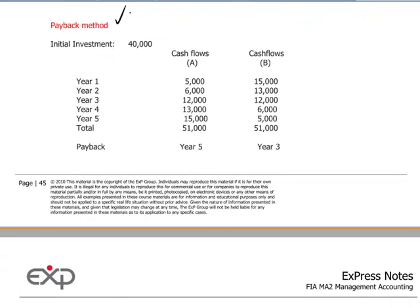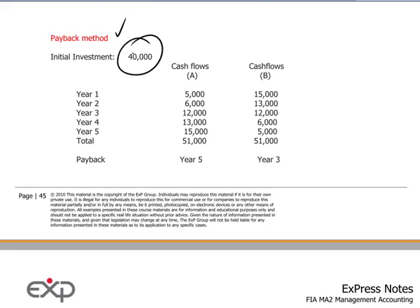Here's the payback method, which is a simpler method of calculating how fast an initial investment can be repaid. We can see that if we add together 5 plus 6 makes 11,000, plus 12,000 equals an accumulated return of 23,000. In the fourth year, 23,000 plus 13,000 gives us 36,000. We have to go a little bit into year 5 to fully recover the 40,000 — so the payback is going to be somewhere within year 5, meaning 4 years plus several months.